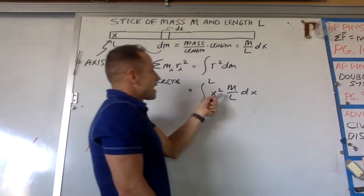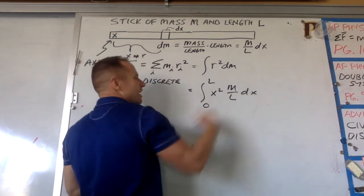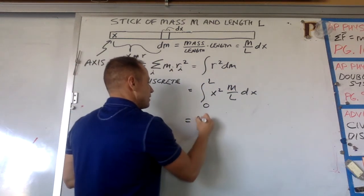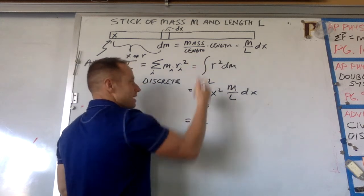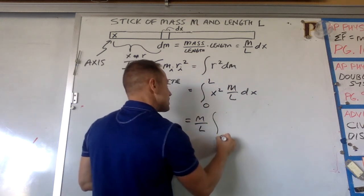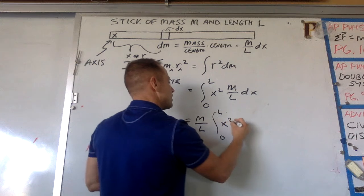So now we're here. M over L is a constant. Let's just pull it out. M over L. Those are just constants. So really all we're doing is integrating from zero to L of x squared dx.